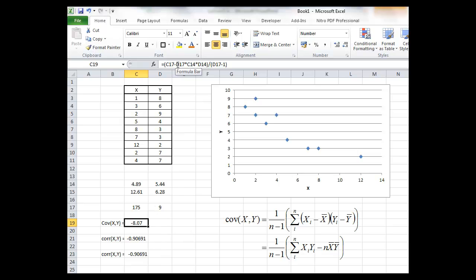We subtract from that d17 the value of n times the value of c14 the mean of x times the value of d14 the mean of y and then divide by d17 the number in the sample less 1. So that gives us this formula here where we postpone the division by n minus 1 until the end of the formula but the result is equivalent.